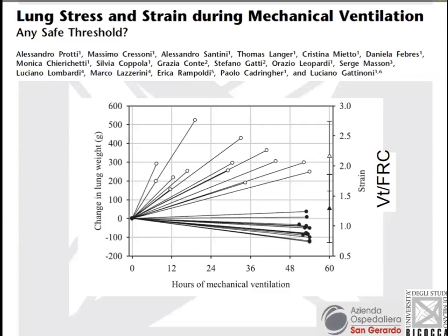There are a number of studies showing that the ratio of tidal volume over the room available for ventilation — in this case FRC — is a determinant of injury. This is a study published by the group of Gattinoni showing that when strain, the ratio of tidal volume over FRC, exceeds a value of two, this causes lung injury as shown by the development of edema. Whereas if this ratio is kept below a given threshold, lung injury does not occur.